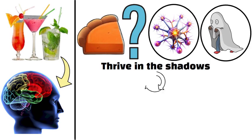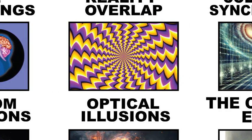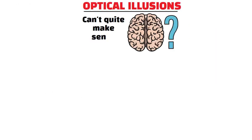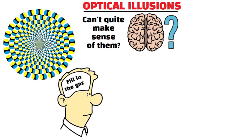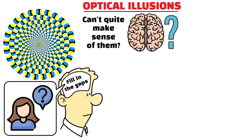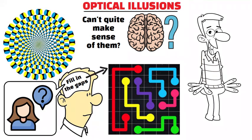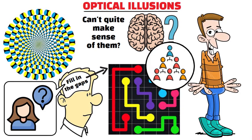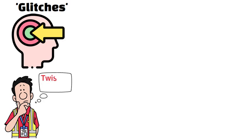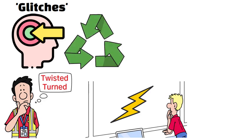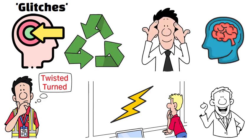Optical illusions. Ever wonder why your brain can't quite make sense of them? It's because optical illusions exploit the brain's desperate need to fill in the gaps when faced with incomplete or ambiguous information. It's like your brain is playing a constant game of connect-the-dots, but sometimes it gets a little overzealous, creating connections that aren't really there. This is where those so-called glitches in our perception come into play, revealing just how easily our understanding of reality can be twisted and turned. So next time you see a static image that seems to move or colors that appear to change, remember, your brain might just be playing tricks on you.